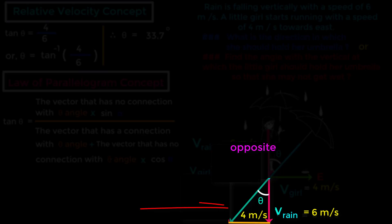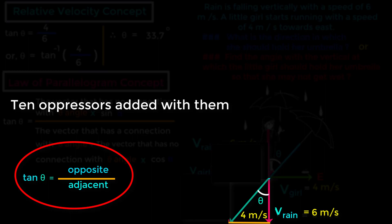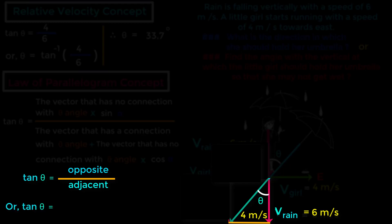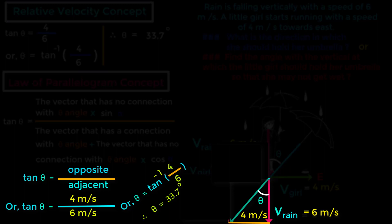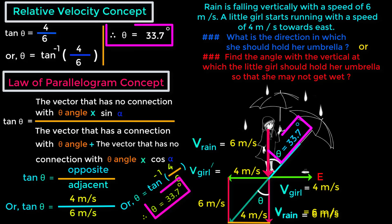This forms a right triangle where the opposite side is 4 m/s and the adjacent side is 6 m/s. We know that tan θ = opposite/adjacent — a formula remembered as 'ten oppressors added,' meaning tan θ = opposite over adjacent. So tan θ = 4/6, therefore θ = tan⁻¹(4/6) = 33.7 degrees. That means the girl must hold her umbrella at 33.7 degrees with the vertical.